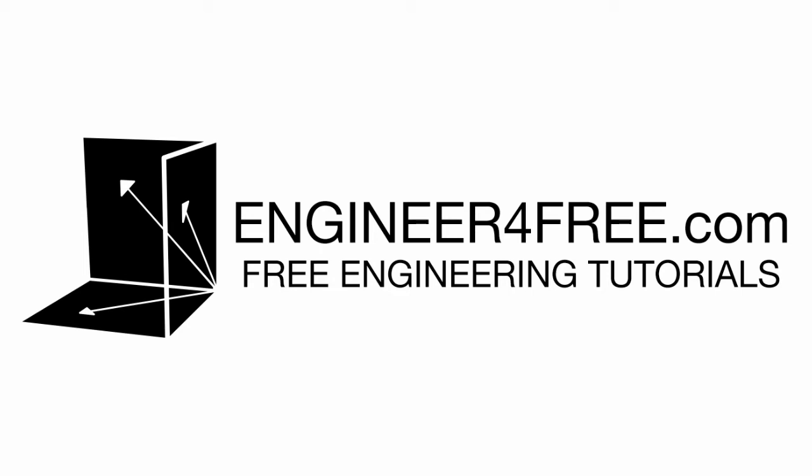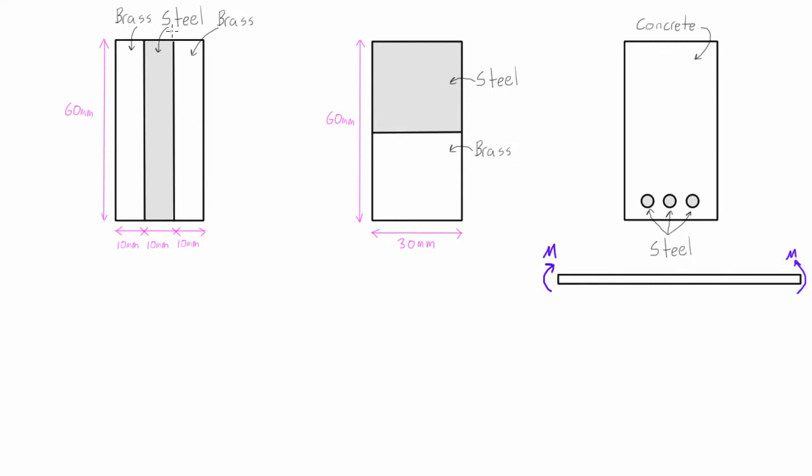Hey guys, welcome back. In this video we are starting to talk about pure bending in composite materials. All composite materials are is if you take a cross section of your member and you see there's more than one material in there, then this will be a composite material because each material will have a different modulus of elasticity.